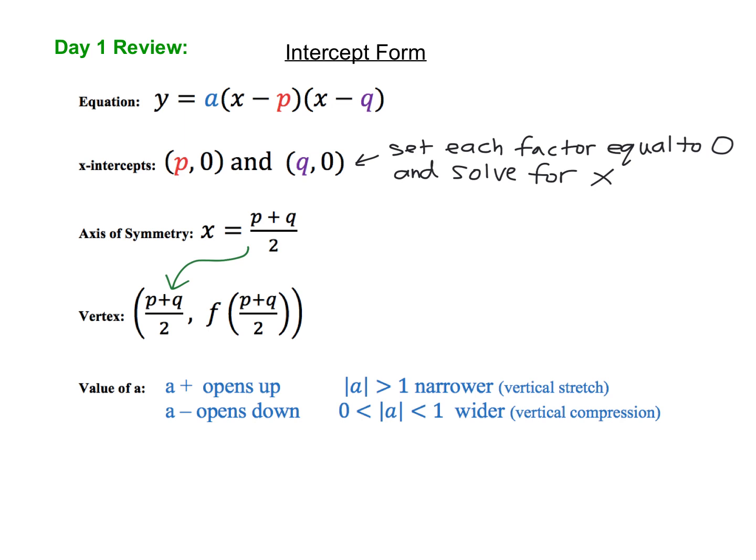And then finally, the value of a does the same thing every single time. For all of the functions that we've looked at, standard form, vertex form, and intercept form, a always determines two things. First, it determines which way the graph opens. When a is a positive number, it opens up. And when a is a negative number, it opens down.